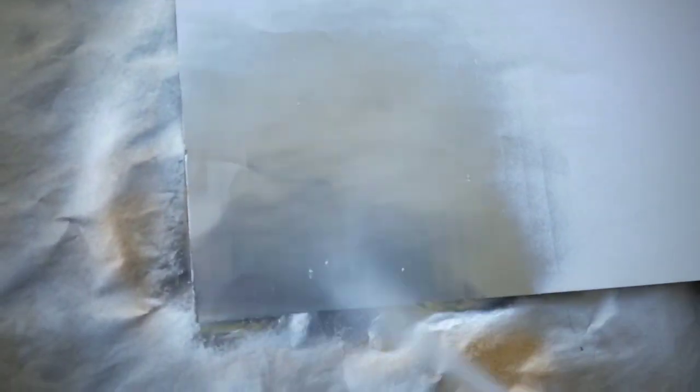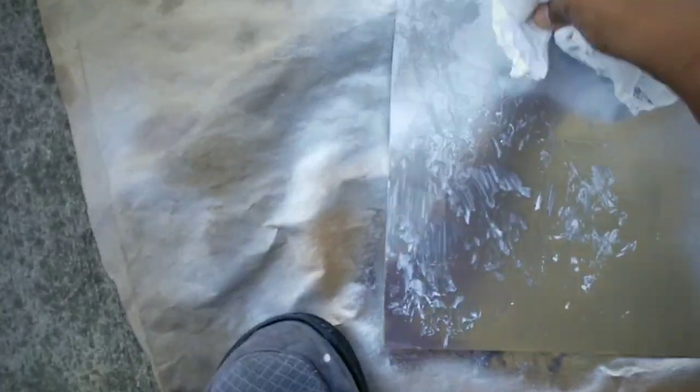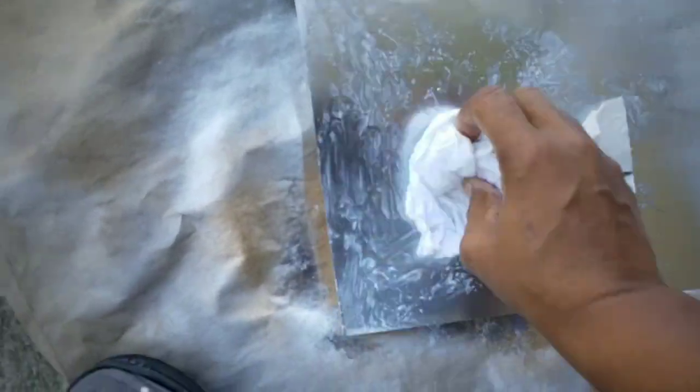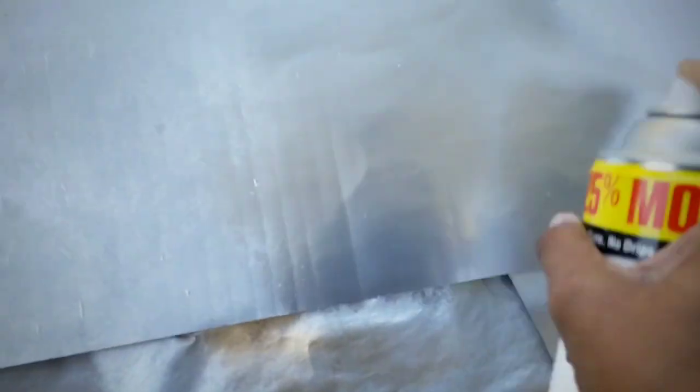Now what you want to do is spray small sections at a time and then, while the paint is still wet, dab it with a paper towel in a random pattern. This will create a textured look similar to galvanized metal. You want to repeat this for the entire board.